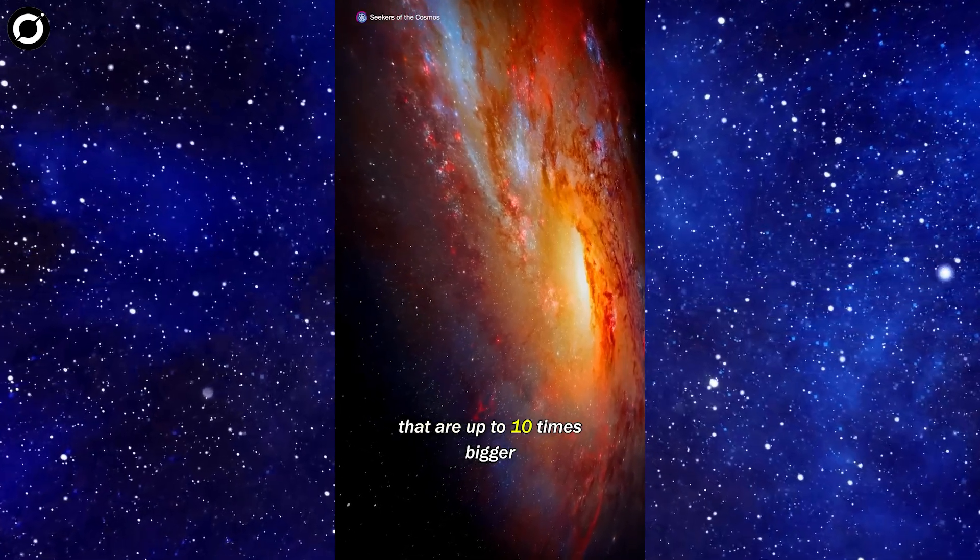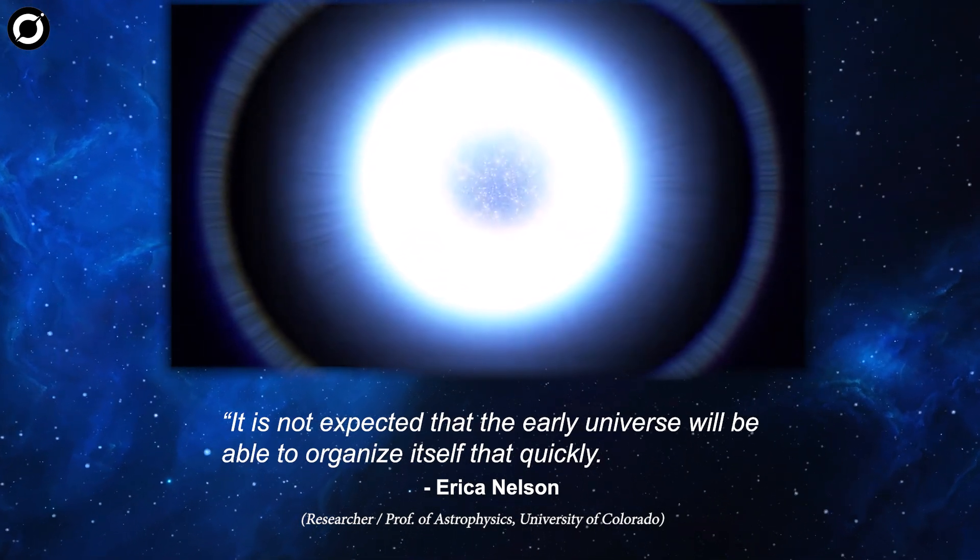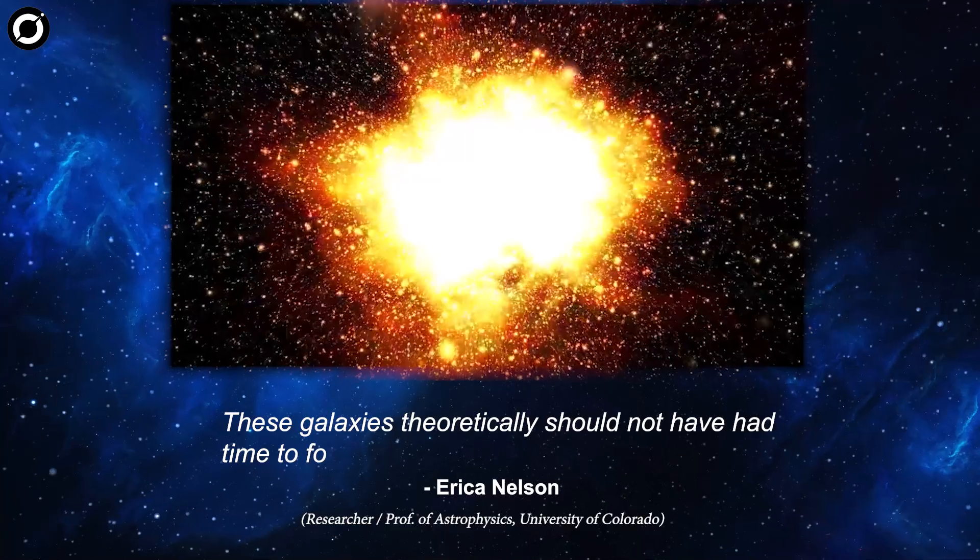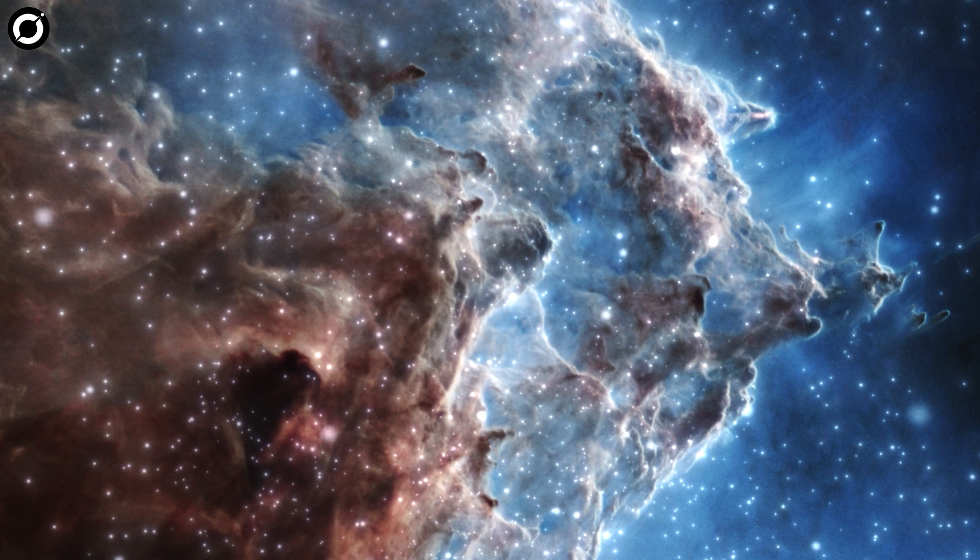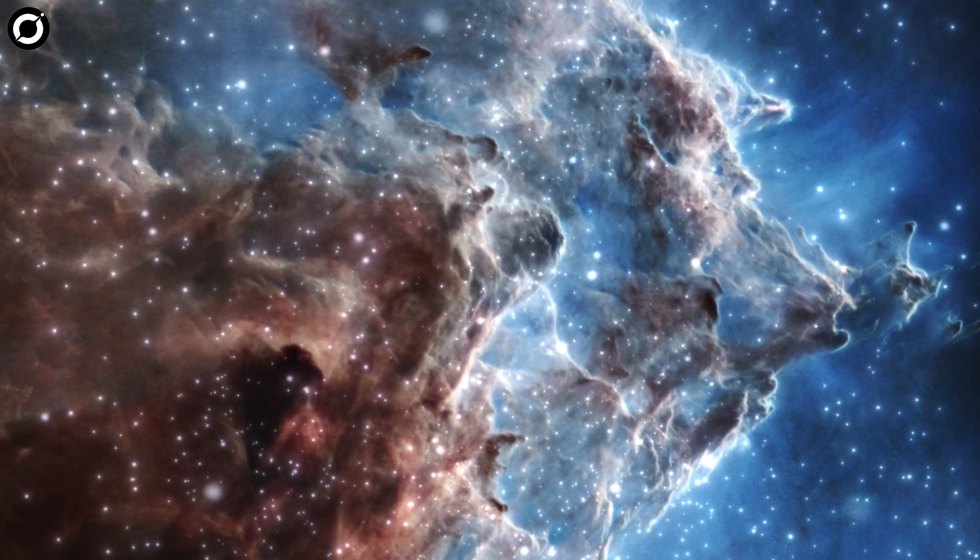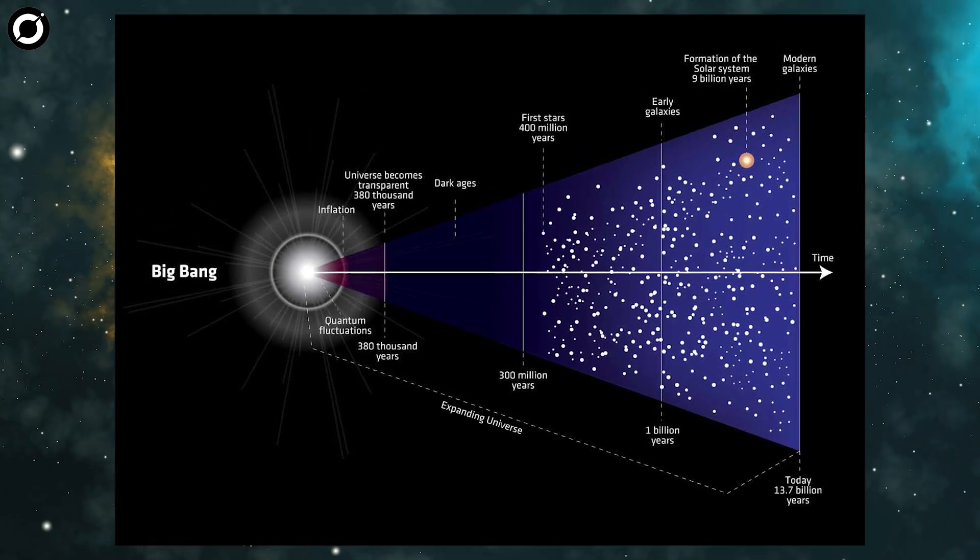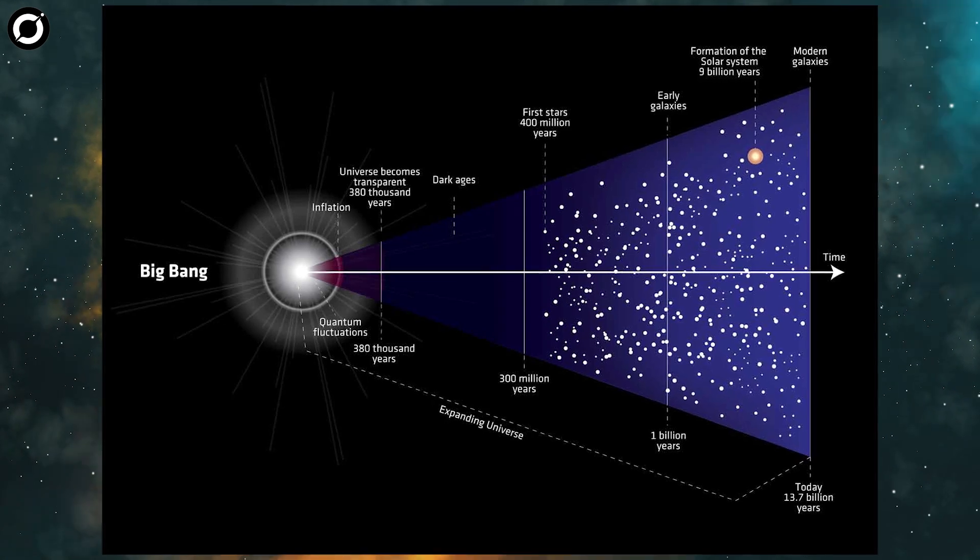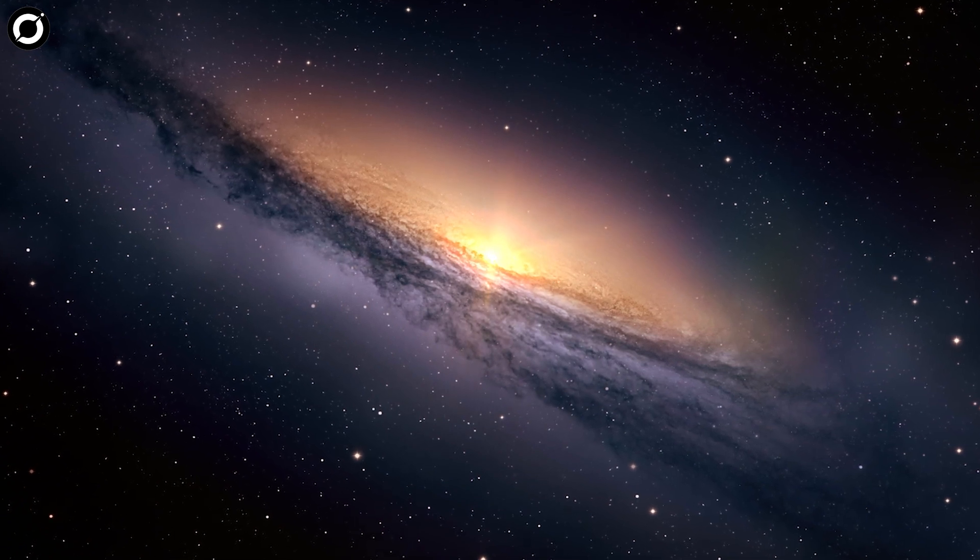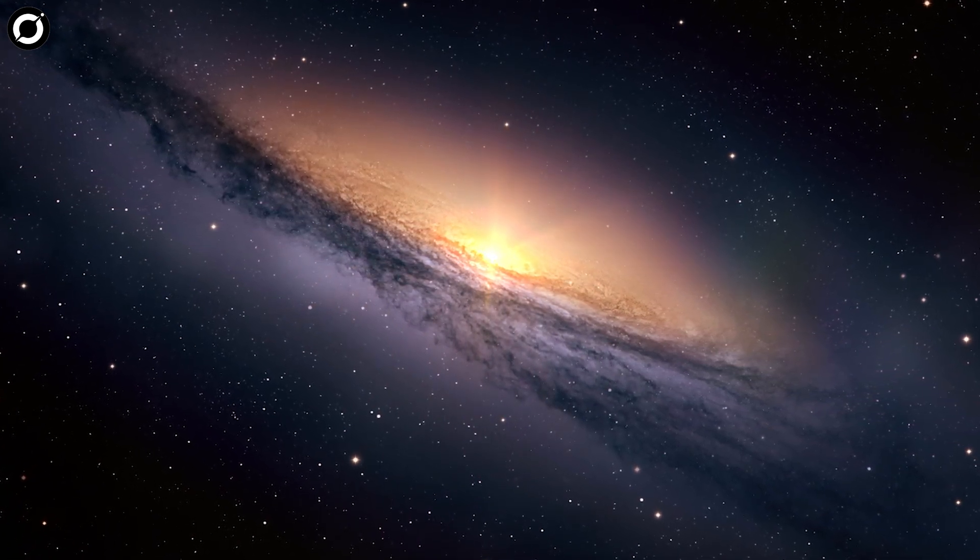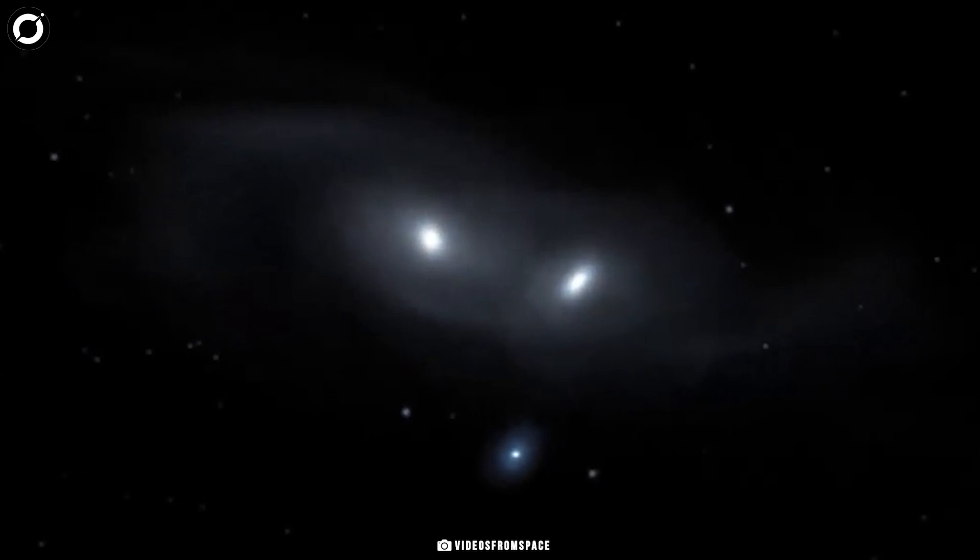But the James Webb telescope has identified six galaxies that exist half a billion years after the Big Bang that are up to ten times bigger than the Milky Way galaxy. It is not expected that the early universe will be able to organize itself that quickly. These galaxies theoretically should not have had time to form. While scientists don't know exactly when the first clumps of stars began to merge into the beginnings of the galaxies we see today, cosmologists have previously estimated that the process began slowly, taking shape within the first few hundred million years after the Big Bang.